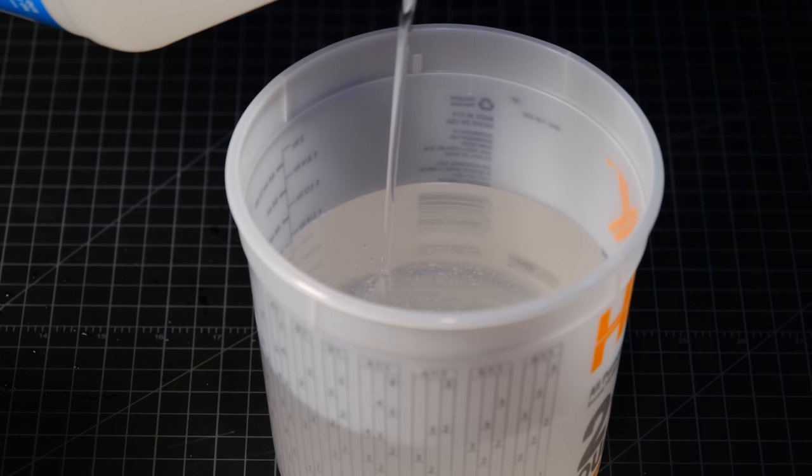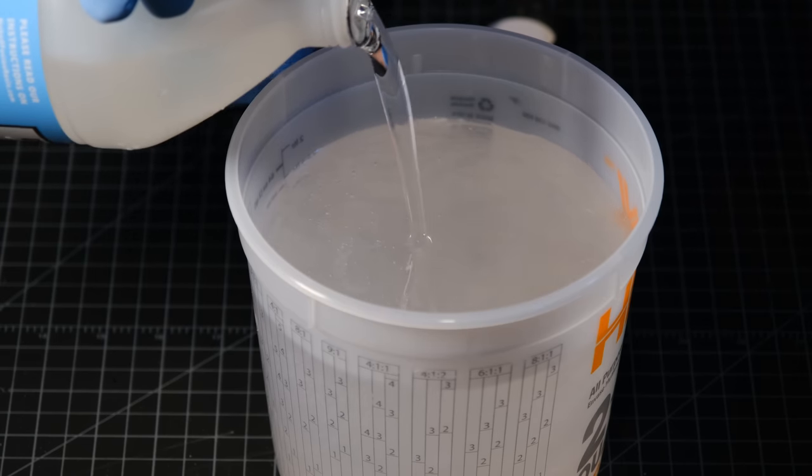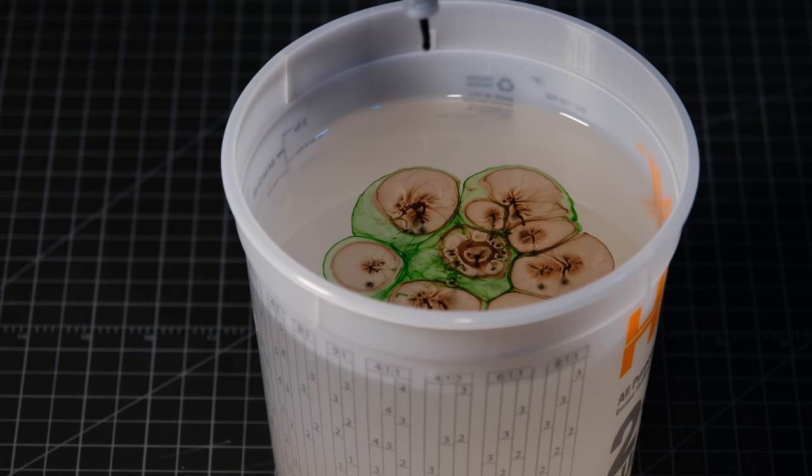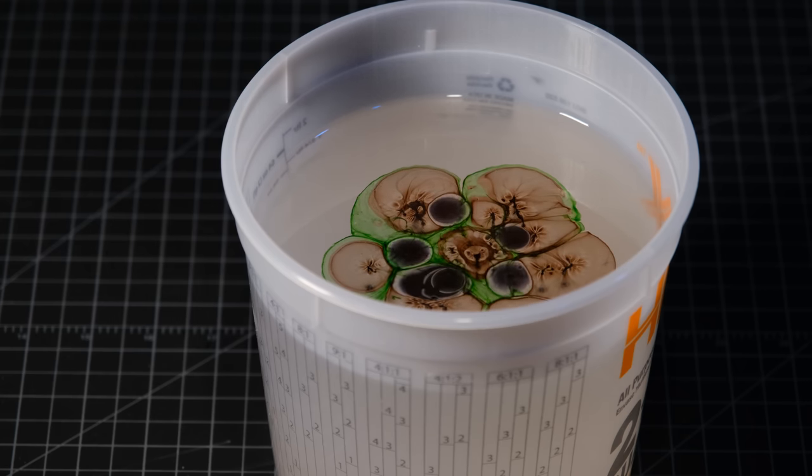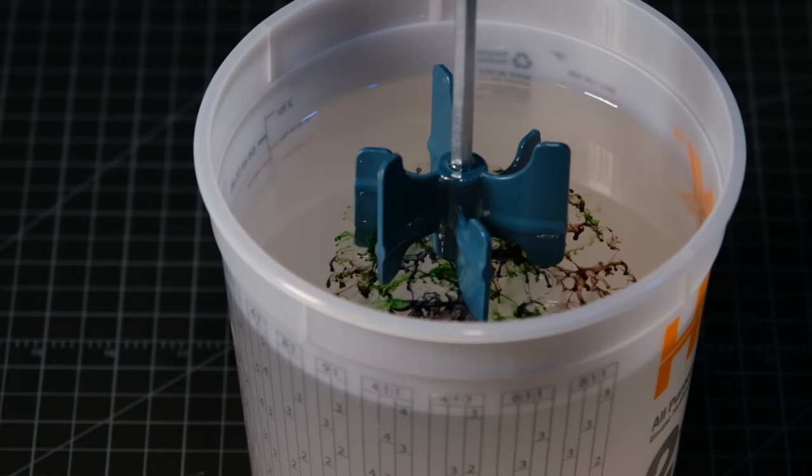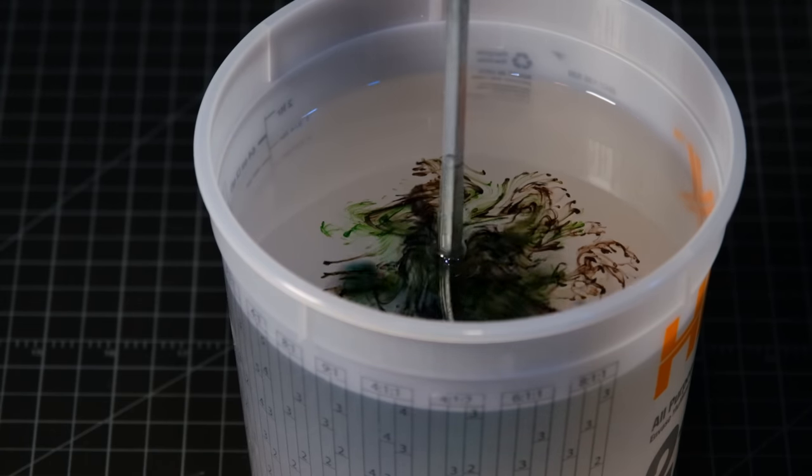I added two parts resin to one part hardener, and then I added my pigments. I used a green, a black, and a brown, as well as one drop of opaque white. This stuff is super potent and it goes a very long way. After that, I mixed it all up.